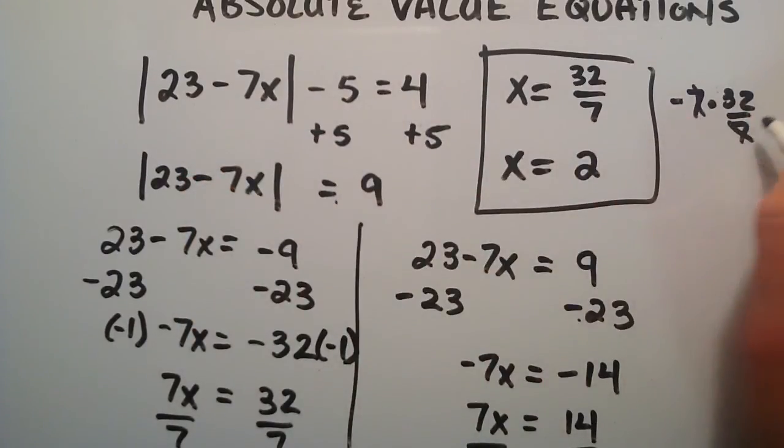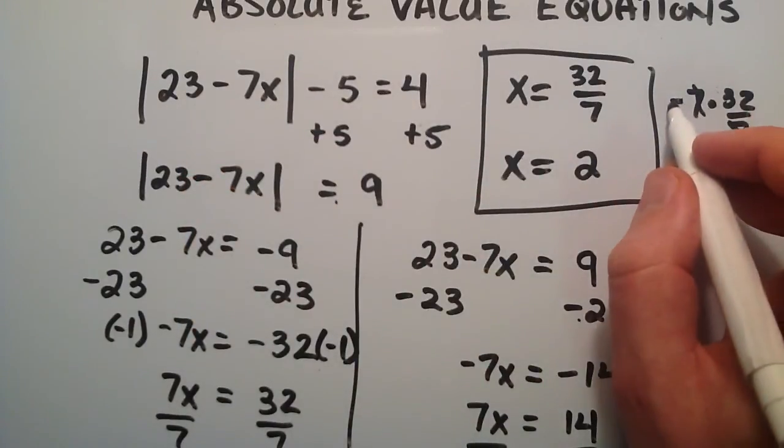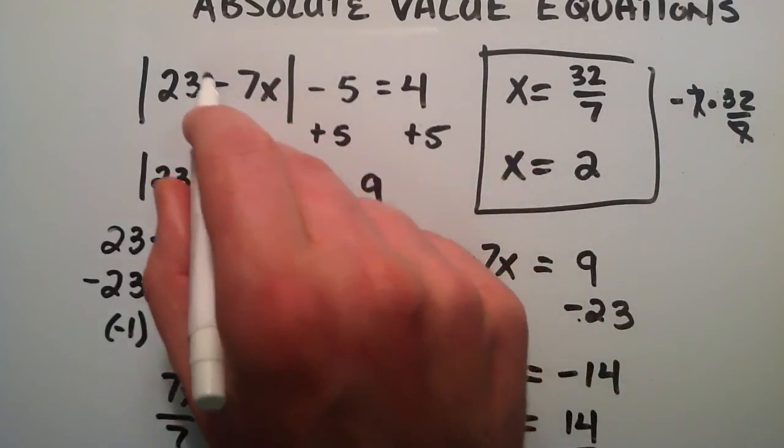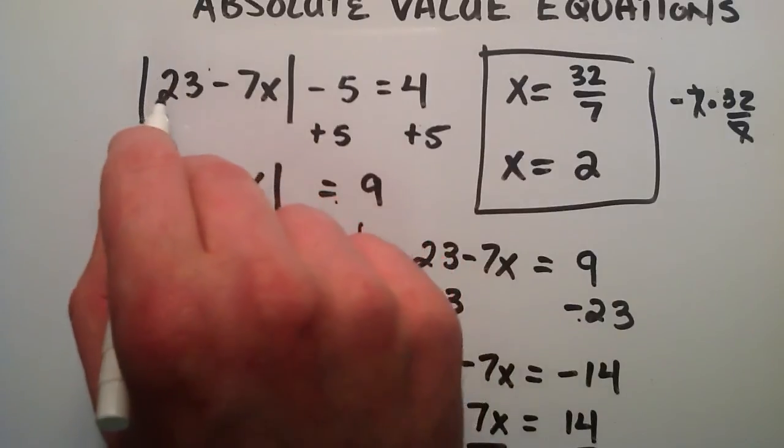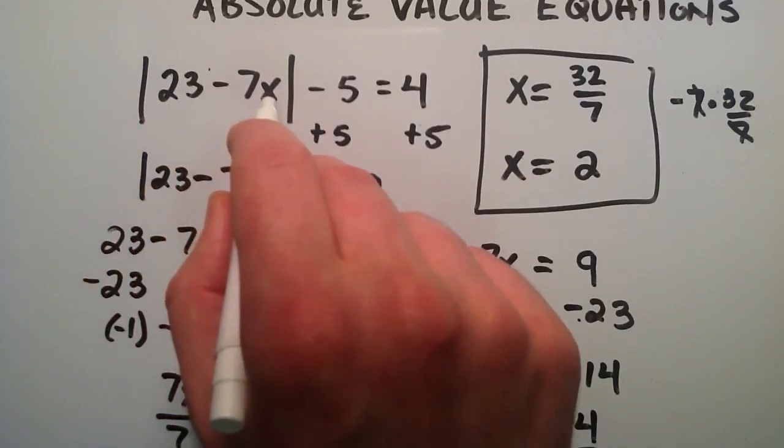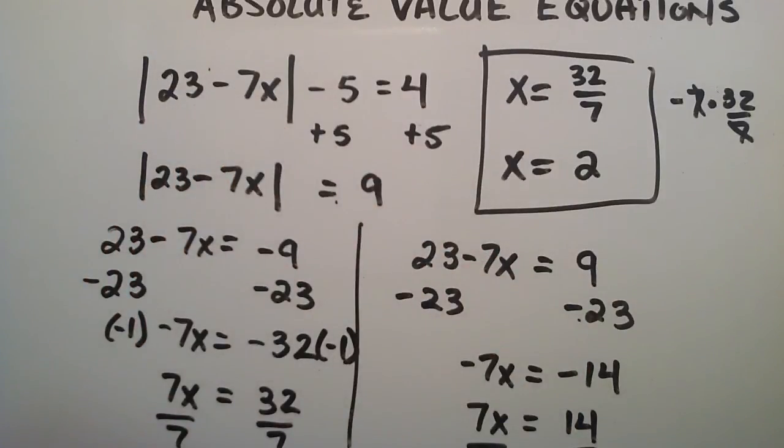7 over 7 cancels. And so we're just left with the minus 32. So this whole part right here is minus 32. So this is 23 minus 32. And 23 minus 32 is negative 9.